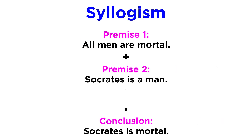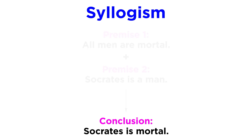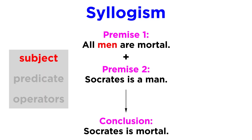Let's return to our original syllogism. As we saw, it contains two kinds of sentences: premises, which were the first two lines, and a conclusion, which is inferred from the premises. Each of these sentences also has three different elements, akin to grammatical elements: the subject, which is the main term being defined; the predicate, which says something about the subject; and the operators, which quantify and qualify the others.